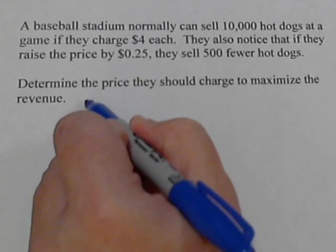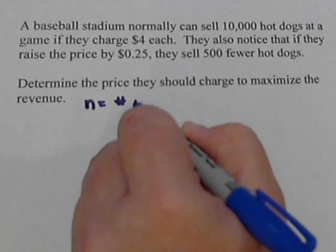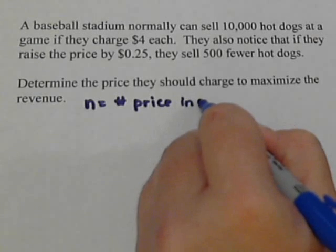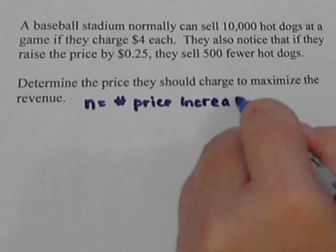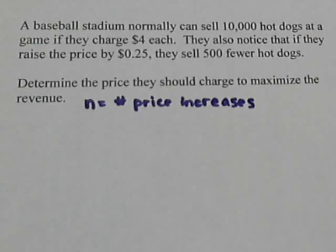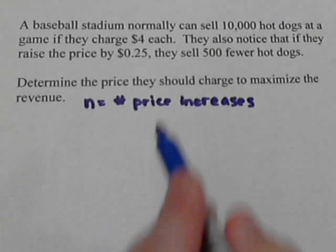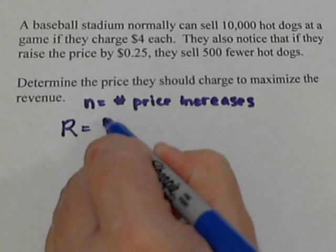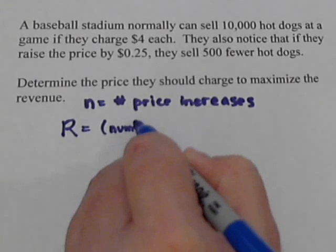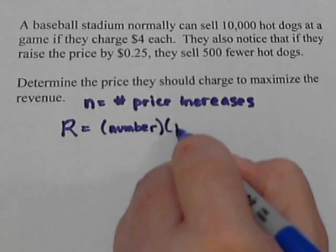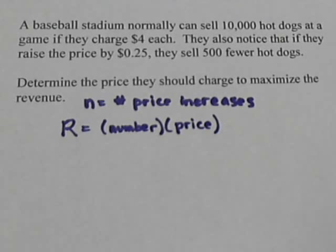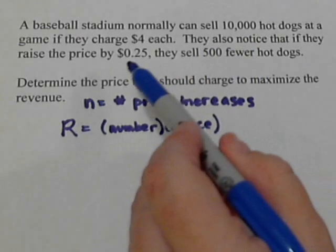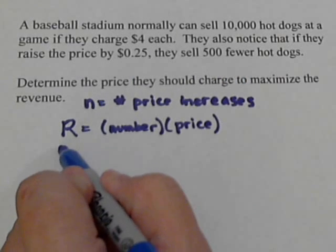We're going to let N stand for the number of price increases. You can also work this problem where N is the number of price decreases, which means they would sell more hot dogs, but we're going to set it up this way. So what is revenue? Revenue is the number of items that we sell — in this case hot dogs — times the price, and that tells us how much money we bring in. This is going to be changing because if we raise the price, we change the number of hot dogs.